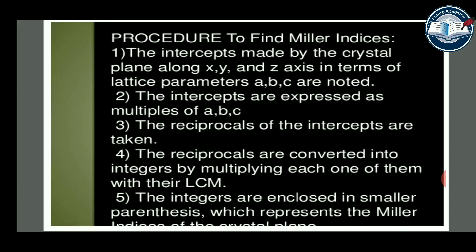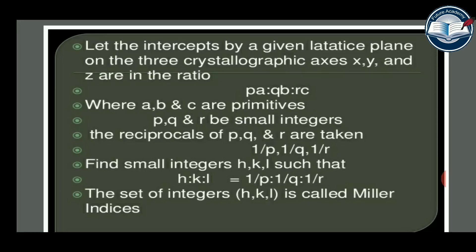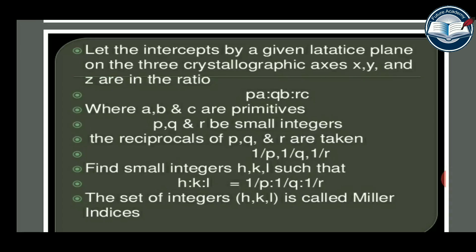Step 5: enclose the integers in parentheses, which represent the Miller indices of the crystal plane. Let the intercepts of a given lattice plane on the three crystallographic axes X, Y, Z be in the ratio pa : qb : rc, where a, b, c are primitive vectors and p, q, r are integers. Take reciprocals 1/p, 1/q, 1/r. Find the smallest integers H, K, L such that H:K:L = 1/p : 1/q : 1/r. The set (H, K, L) is called the Miller indices.